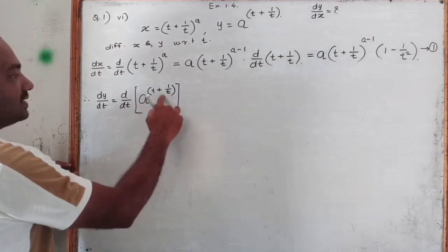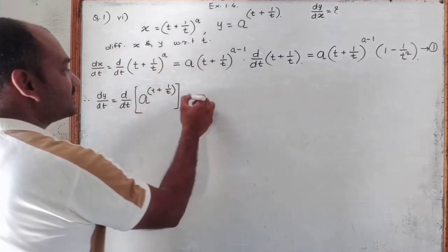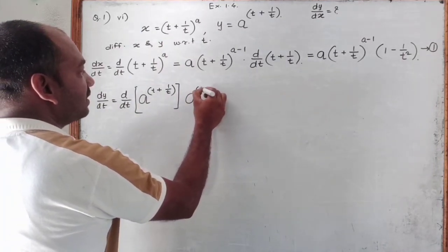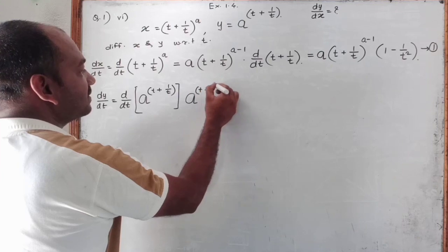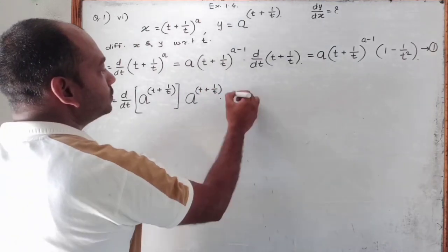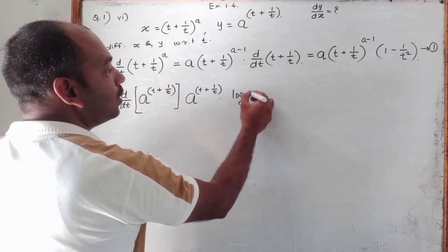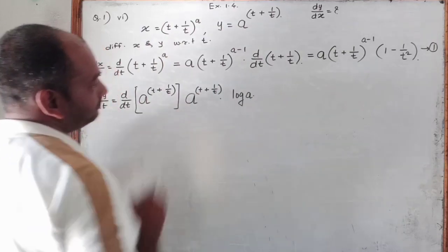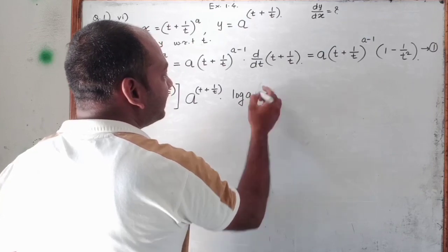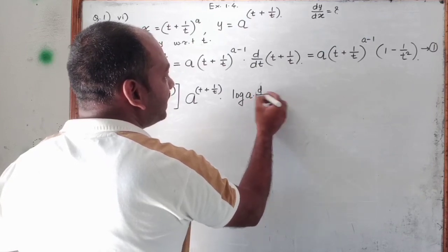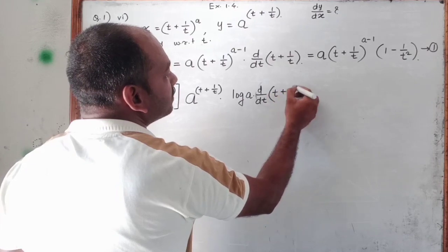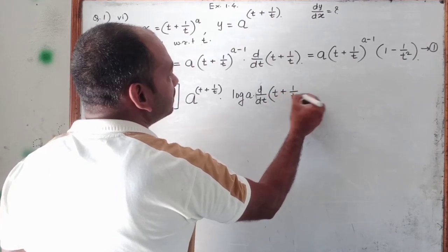Now the derivative of a raised to x is a raised to x into log a. So the derivative here is a raised to t plus 1 upon t, as it is, into log a. And again the derivative of d by dt of t plus 1 upon t.